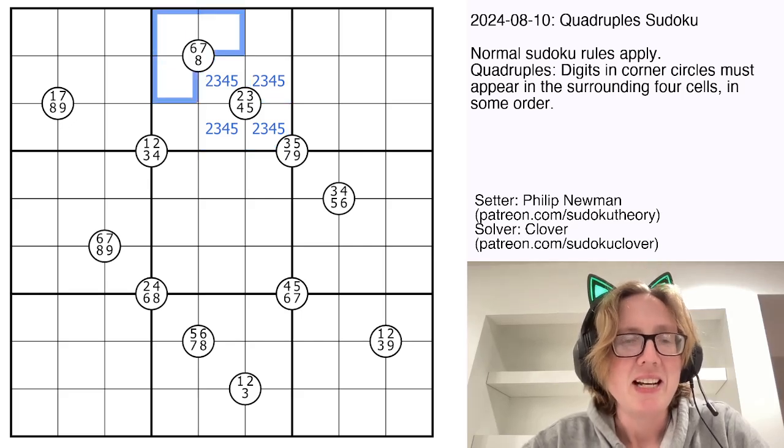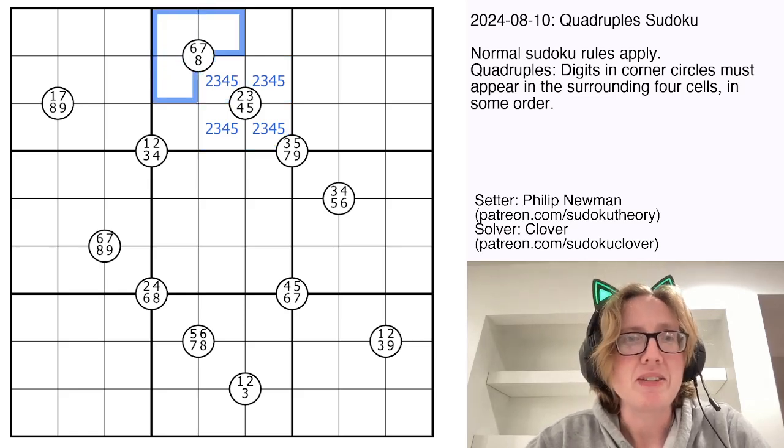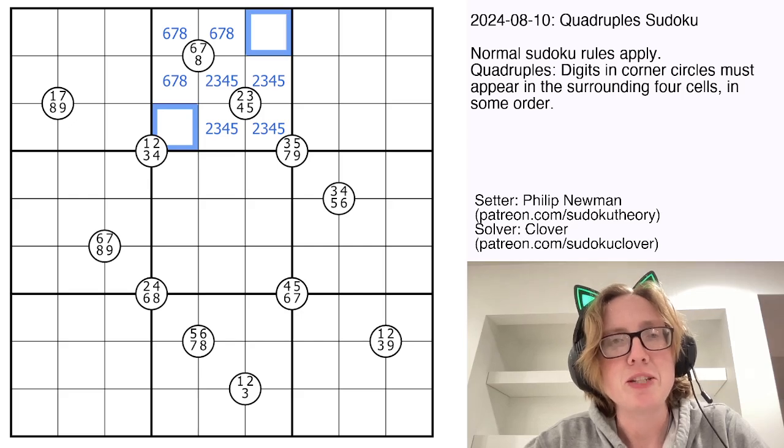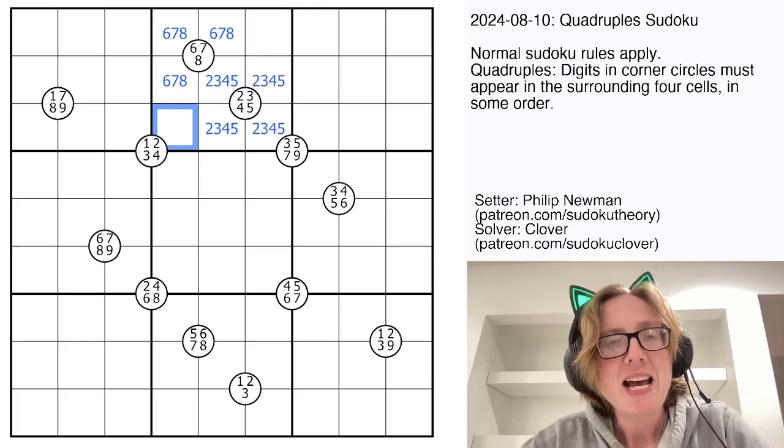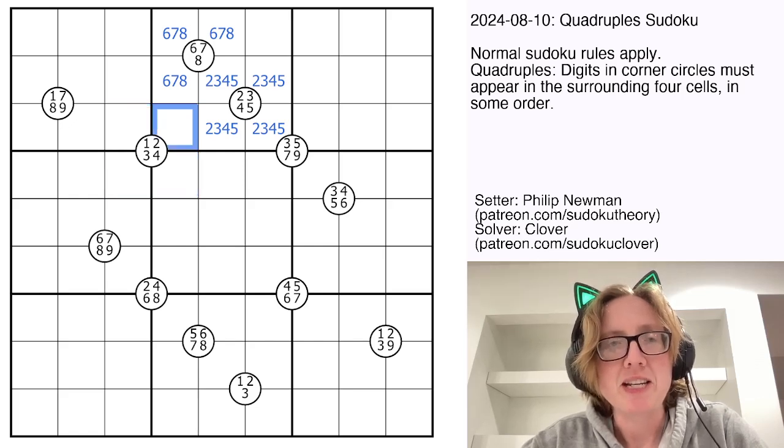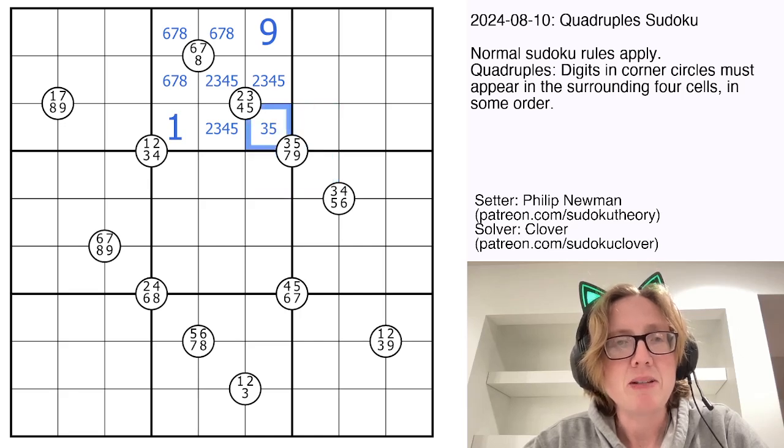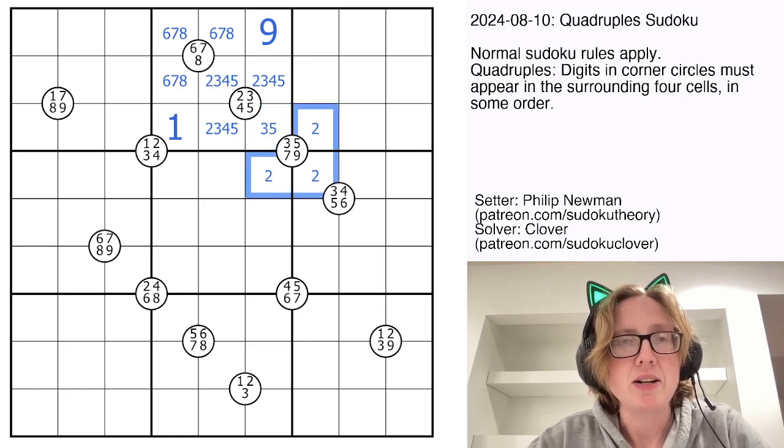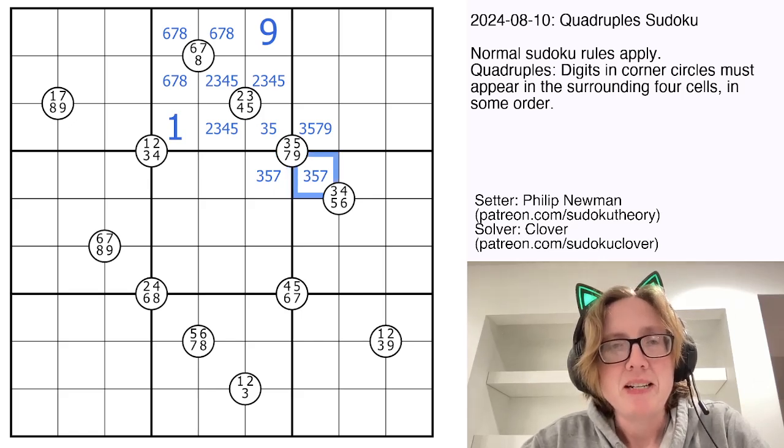So now six, seven, and eight. We know this cell can't be a six, seven, or eight because it's already marked as two, three, four, or five. So six, seven, and eight have to go there. And that means our last two digits in that region in box two have to be one and nine exactly. Now this quadruple tells us the digits that go around this are one, two, three, and four. So that can't be two or four there. I eliminated those. And then these are three, five, seven, and nine. This can't be nine. This also can't be nine because it's in this three, four, five, six quadruple.